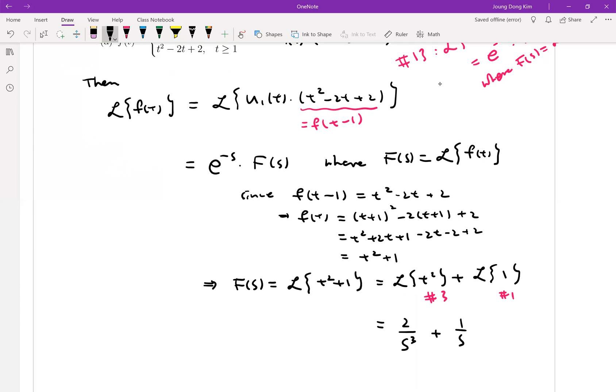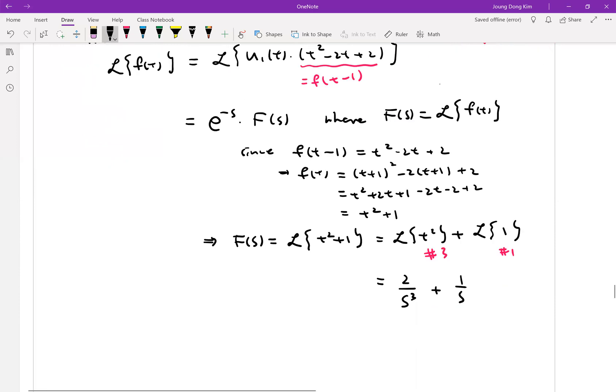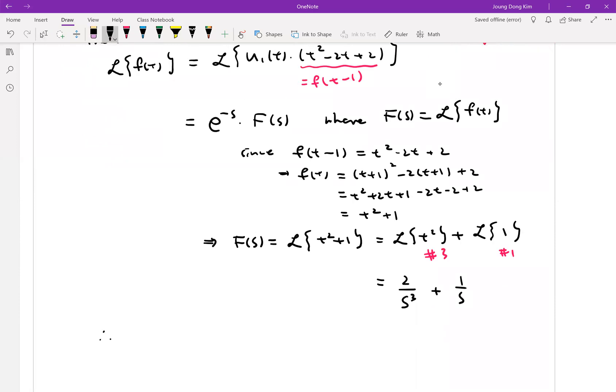Then that is equal to 2 over s cubed and just simply 1 over s. Then we need one more step. But that's it, right? So now I can say the Laplace transform of given function is equal to e to the minus s times 2 over s cubed plus 1 over s. Is it clear?